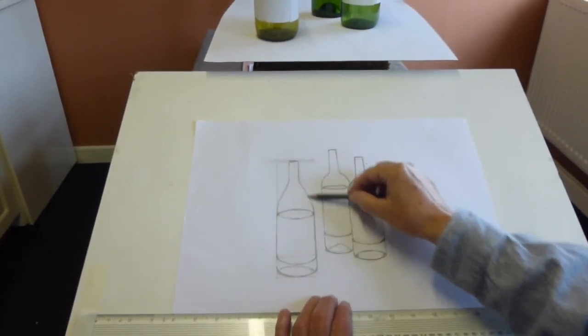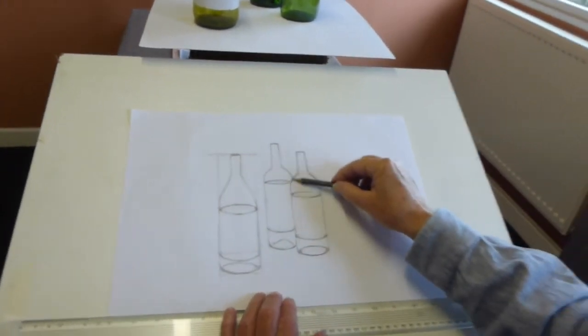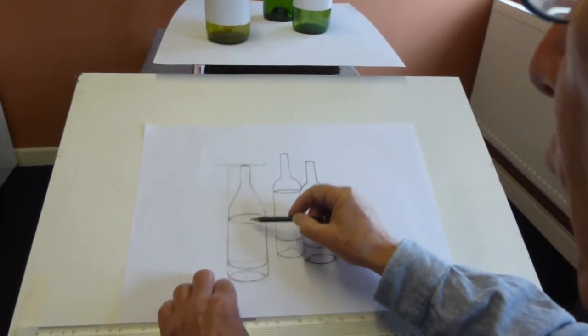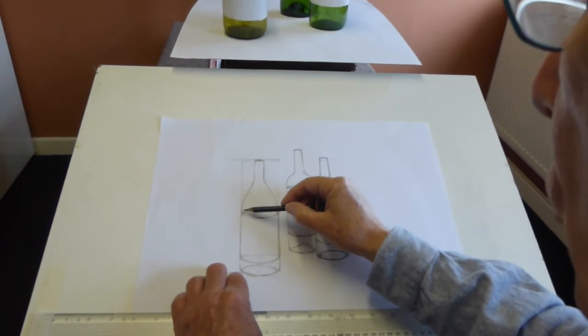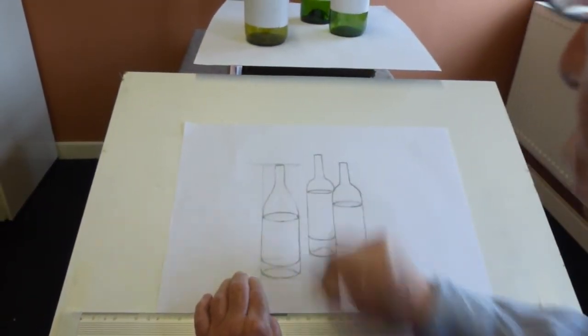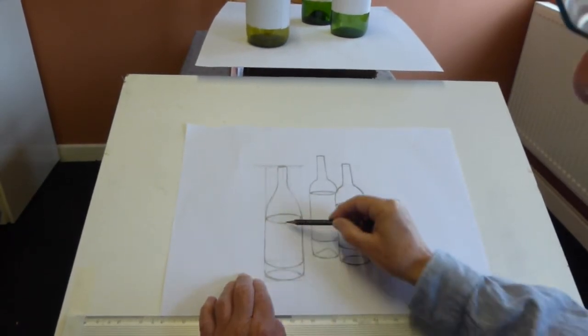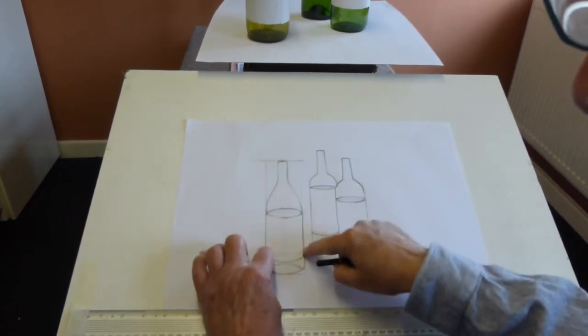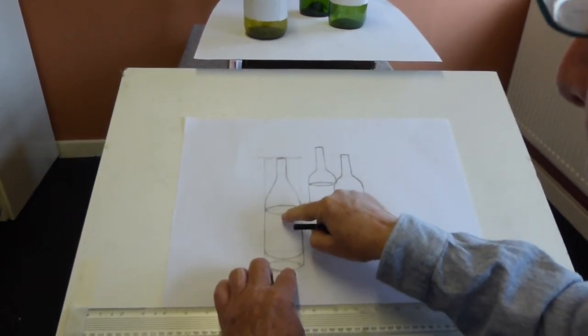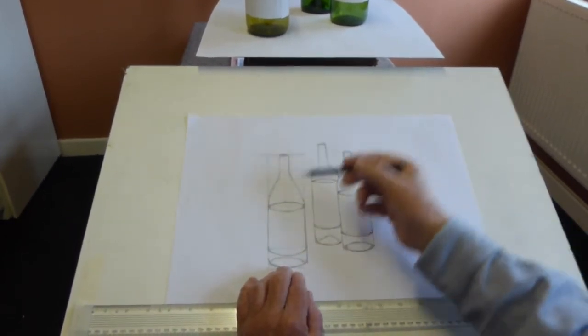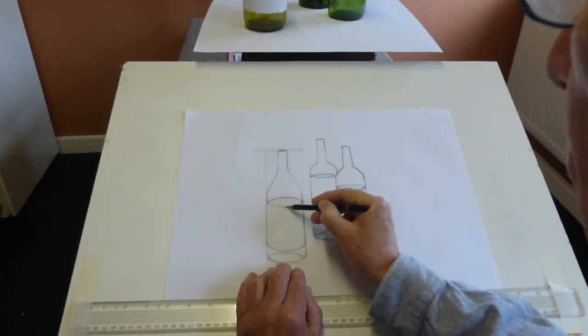Then we need to know where the shoulder starts. You might notice also the shoulder in this bottle is different to these ones here. So what we need to do is find out where the shoulder starts. You might notice that the shoulder starts at the top of the label. So we need to know how far up the label is. So again, we take the width of the bottle, count it up, and see where it comes to. In this case, it's about one and a half times. So that's marked there.